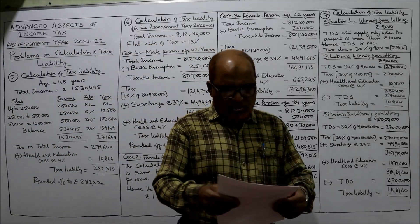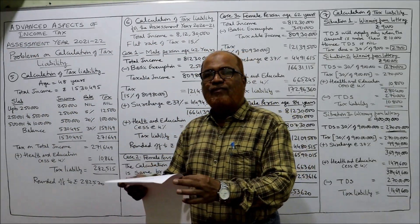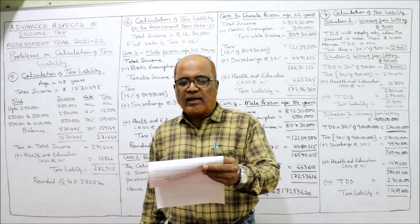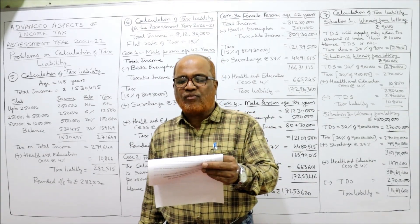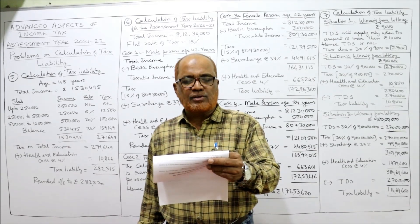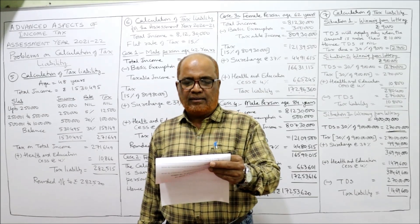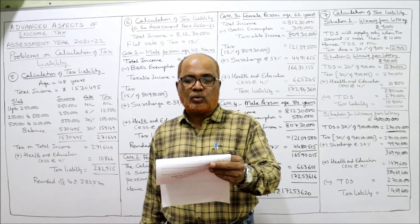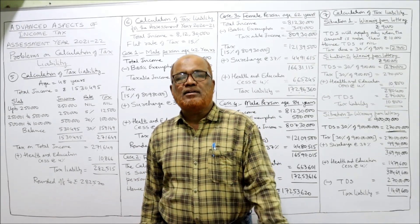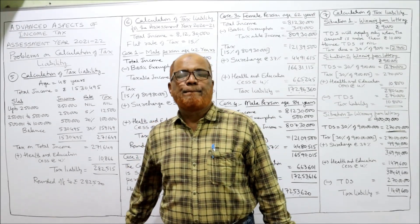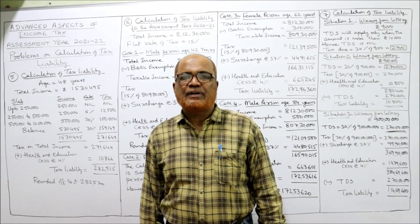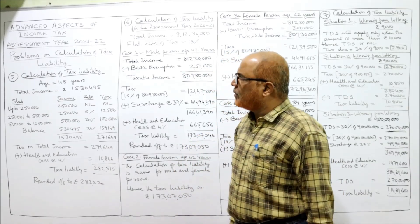Now I'm going to start Problem Number Five. During the previous year 2021, the total income of an individual (SSC) whose age is 48 years is rupees fifteen lakh thirty thousand four hundred ninety-five. Calculate the tax liability for the assessment year 2021-22. The SSC's age is 48 years, meaning non-senior citizen, and the basic exemption limit is two lakh fifty thousand.